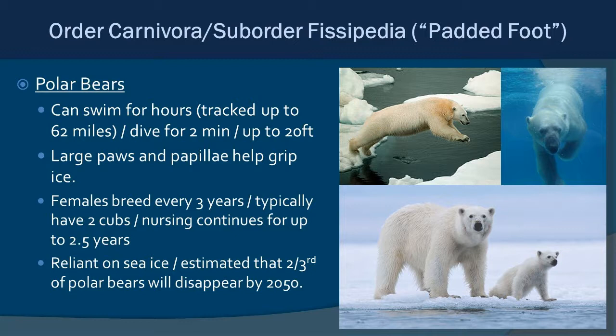Polar bears undergo induced ovulation, meaning the act of copulation causes ovulation, so they must copulate repeatedly in order for the female to become pregnant. Sadly, polar bears are heavily reliant on sea ice to travel between areas. Due to climate change, sea ice is decreasing and their habitat is shrinking. It is estimated that about two-thirds of all polar bears will be gone by 2050, with a serious possibility of losing polar bears in the wild possibly within our lifetimes.